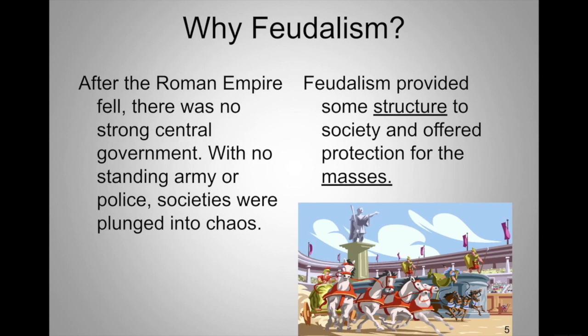Why did feudalism develop? The Roman Empire had a strong centralized government, but when it fell apart, there was a lack of leadership. People still needed protection, so they gave their allegiance to local kings. Those kings ruled smaller areas, with lords beneath them, then knights, then peasants — a four-tiered system where the goal was to work together to help each other.